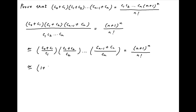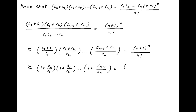Or in other words, 1 plus c0 upon c1 times 1 plus c1 upon c2 times and so on 1 plus cn minus 1 upon cn is equal to n plus 1 whole raised to the power n upon n factorial.